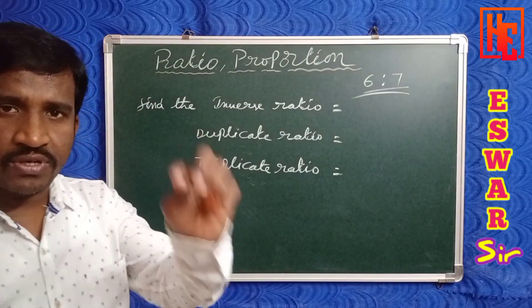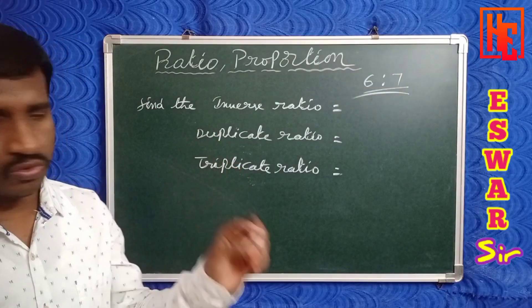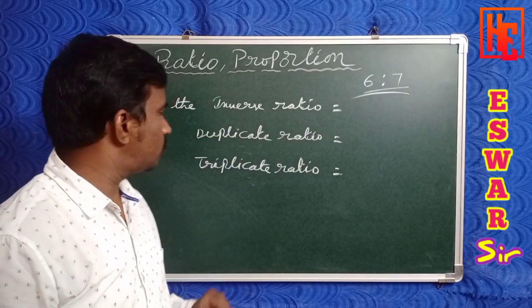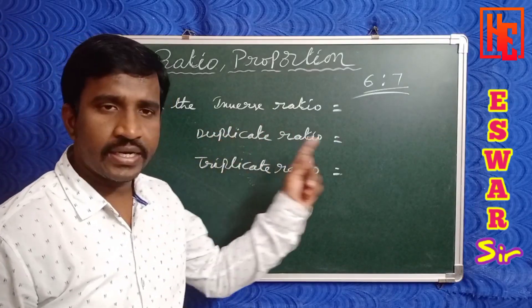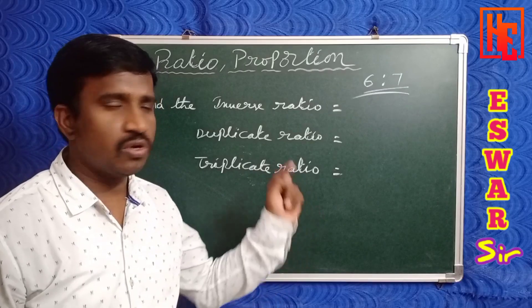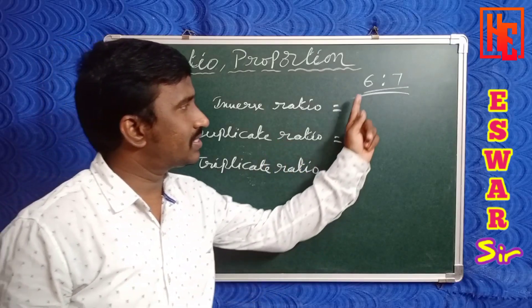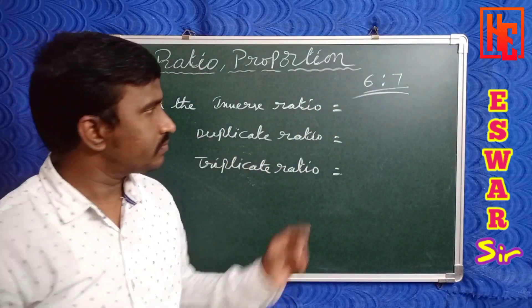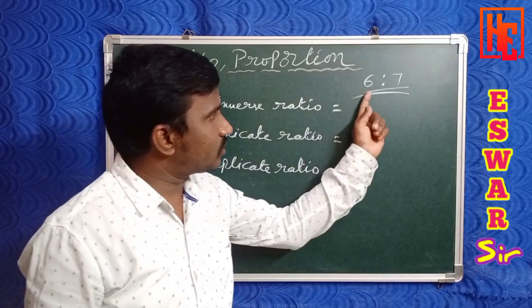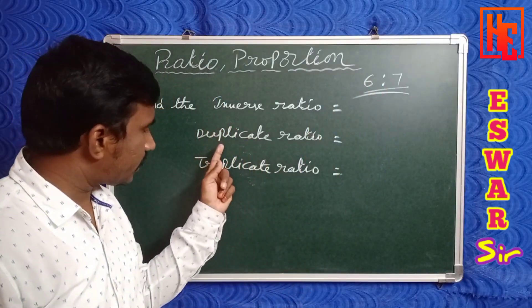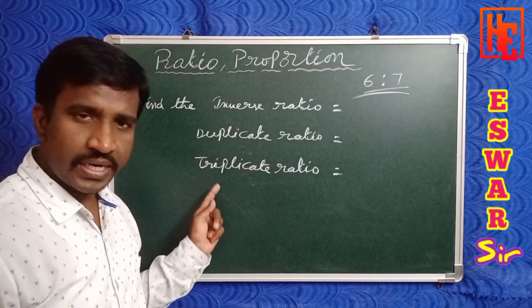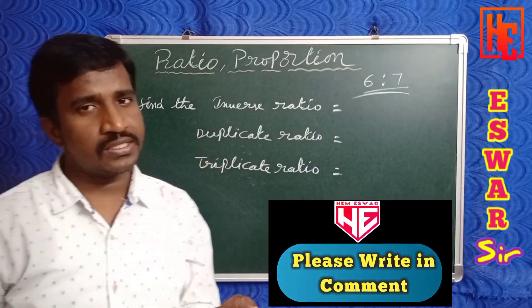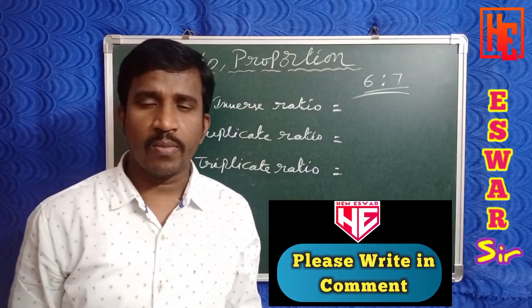Friends, as practice, find the inverse ratio, duplicate ratio, and triplicate ratio of 6 is to 7. Try it yourself and comment your answers in the comment box.